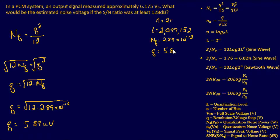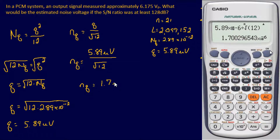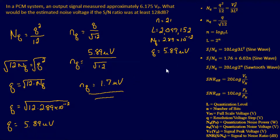All I'm doing is using algebra to manipulate these equations as needed. Now that I have the resolution, I can plug it into the noise voltage equation: noise voltage equals resolution divided by the square root of 12. So that's 5.89 microvolts over the square root of 12, which comes out to 1.7 microvolts. That's our answer.